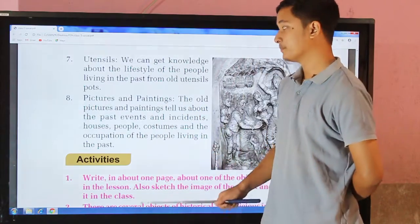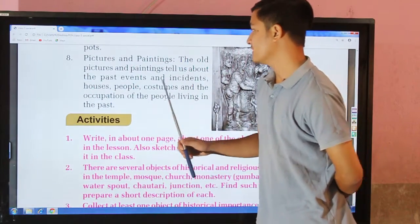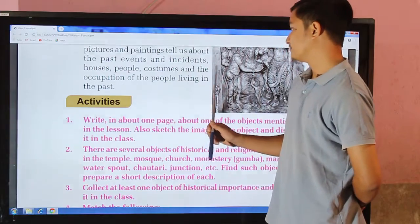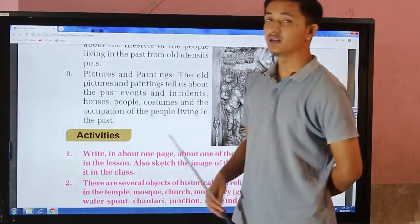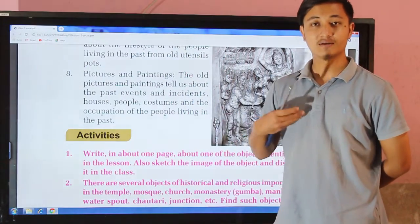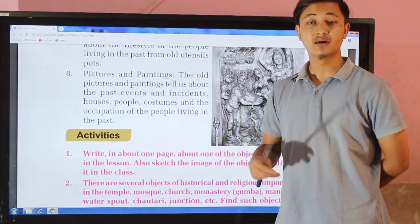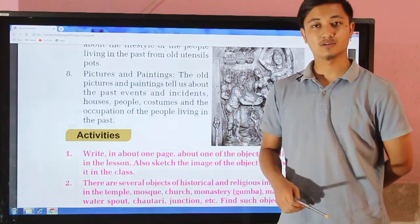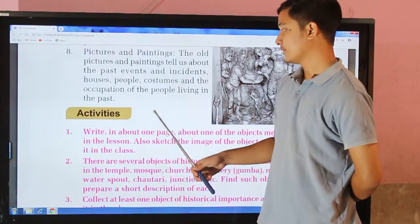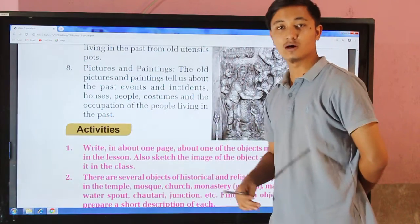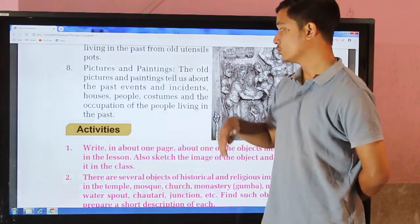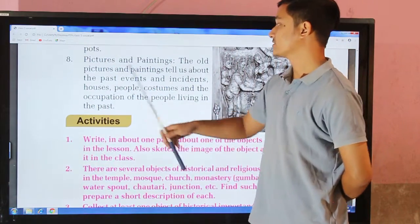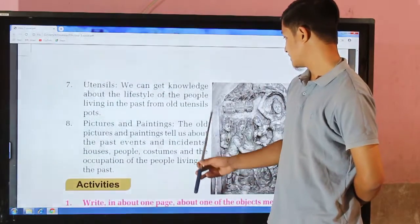Pictures and paintings tell us about past events and incidents, houses, people's costumes, and the occupations of people living in the past. Even if we haven't seen a king or ruler ourselves, from old pictures and paintings we can know how they looked, how the royal family and prime ministers appeared, and the overall lifestyle of people in ancient times.